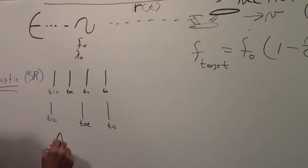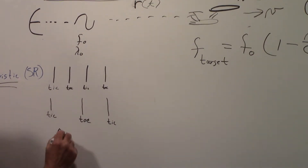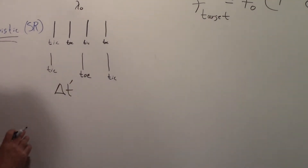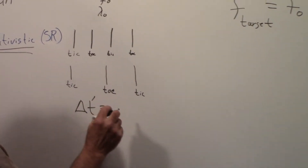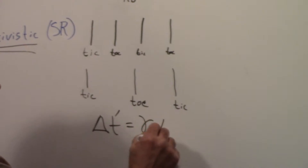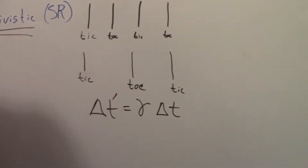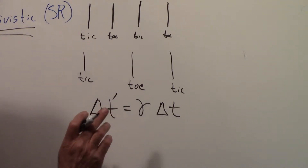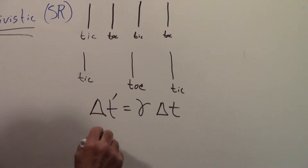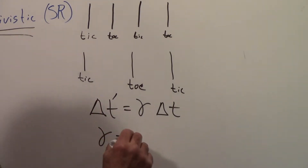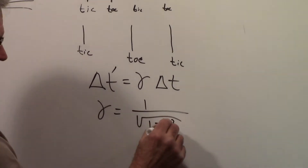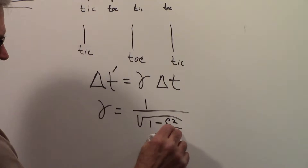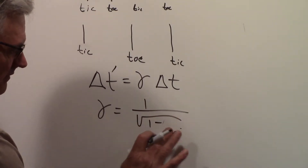The relationship for this: a prime indicates a moving coordinate system. The time relation is delta t prime equals gamma times delta t, where gamma is the Lorentz factor. Gamma is equal to 1 over the square root of 1 minus v squared over c squared.